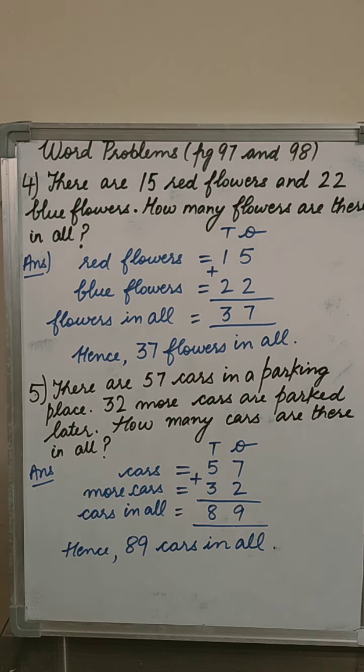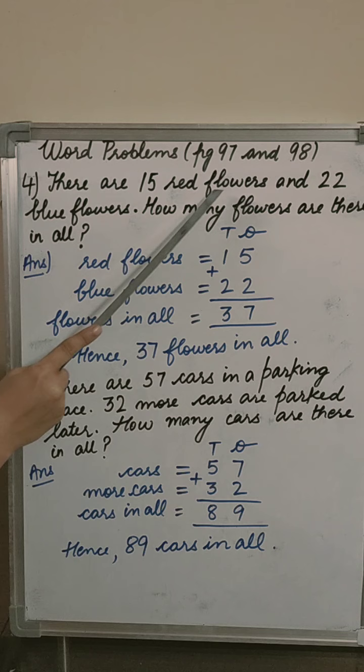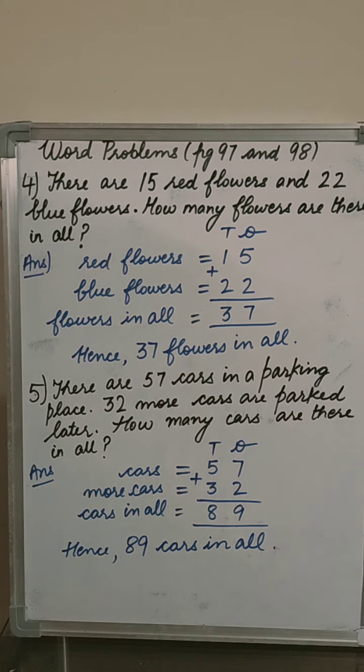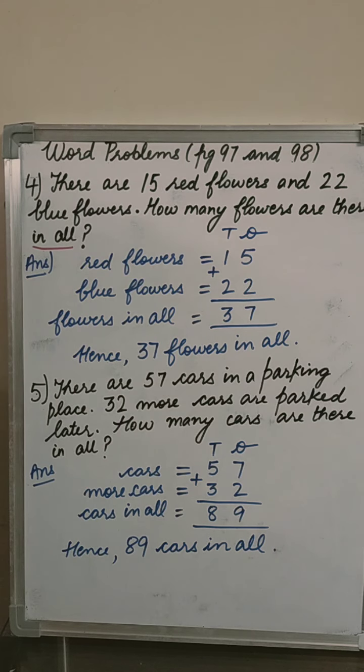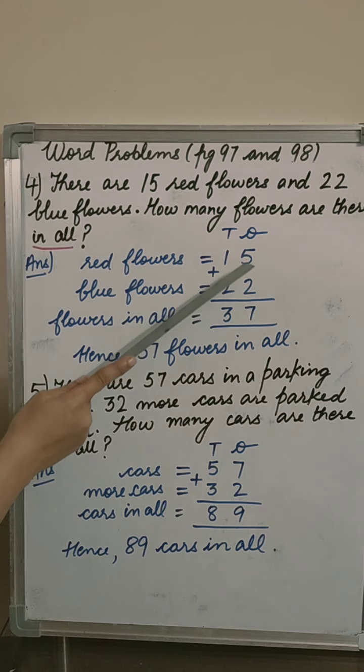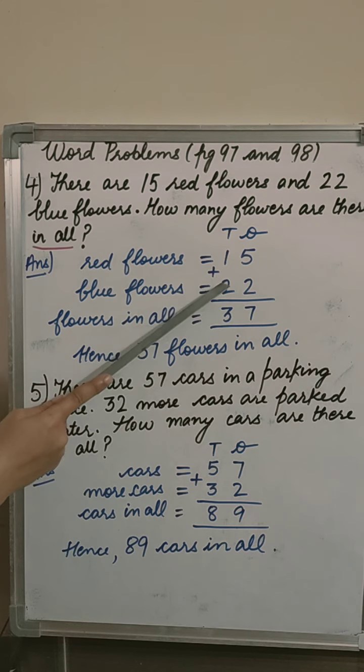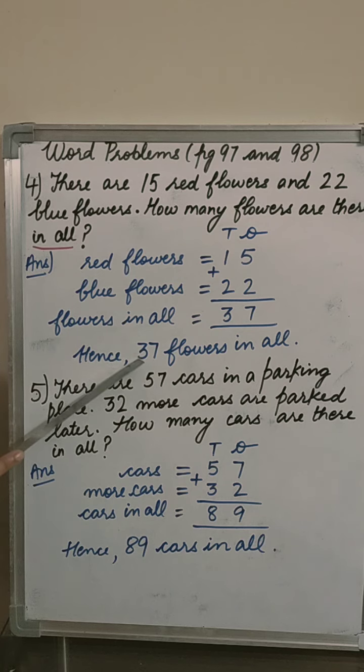Question number 4. There are 15 red flowers and 22 blue flowers. How many flowers are there in all? The keyword is in all. In all means you have to add. Red flowers 15, blue flowers 22, flowers in all means plus. Ones column, 5 plus 2, 7. Tens column, 1 plus 2, 3. Hence, 37 flowers are there in all.